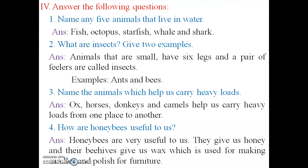Second question — what are insects? Give two examples. Answer: animals that are small, have six legs, and a pair of feelers are called insects. Examples: ants and bees.